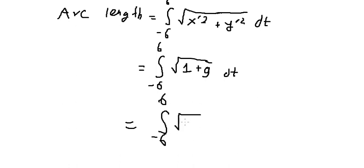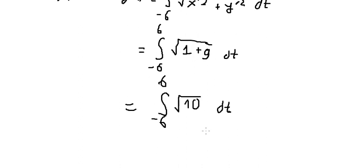So we get the square root of 10 dt. And now we got the final answer: the square root of 10, the integral of dt, you get t, and we have the boundary. Now we got the final answer.